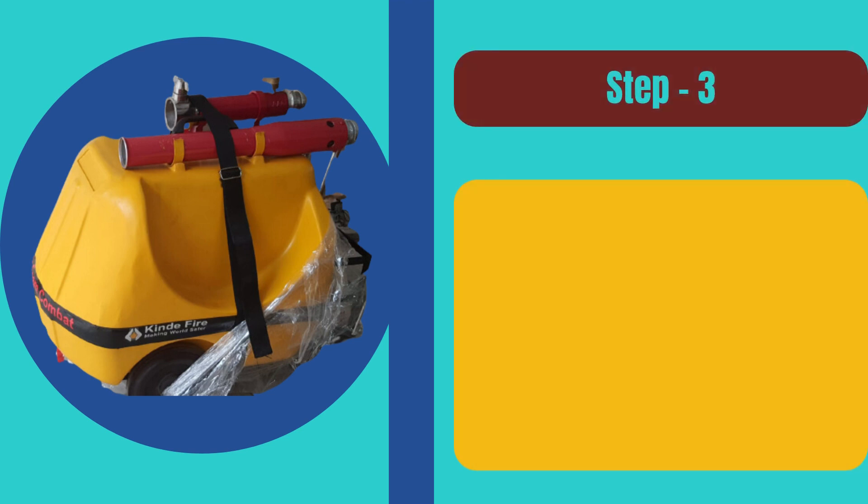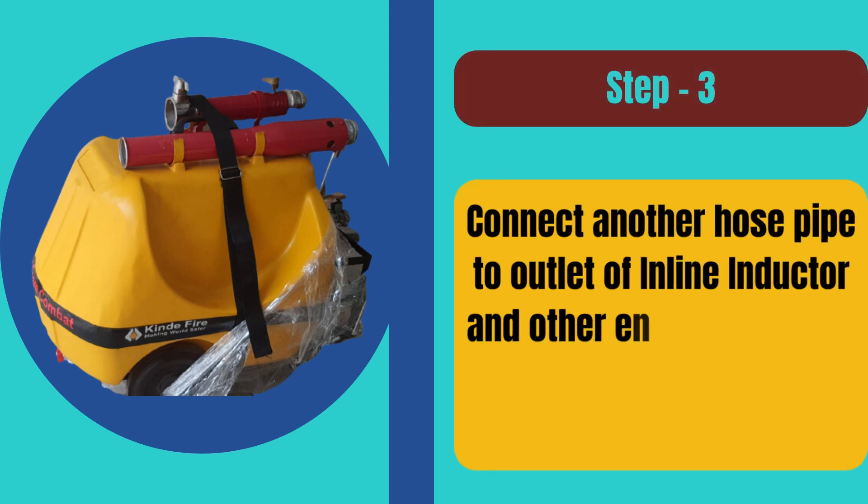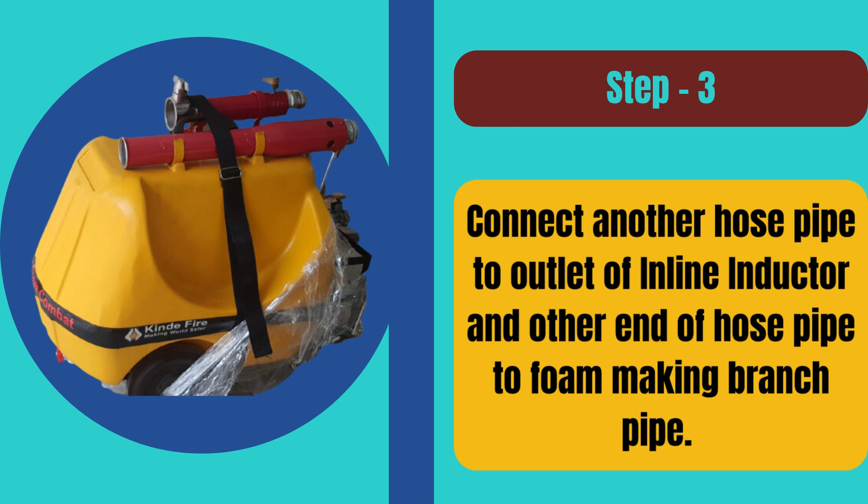Step 3: Connect another hose pipe to outlet of inline inductor and other end of hose pipe to foam making branch pipe.